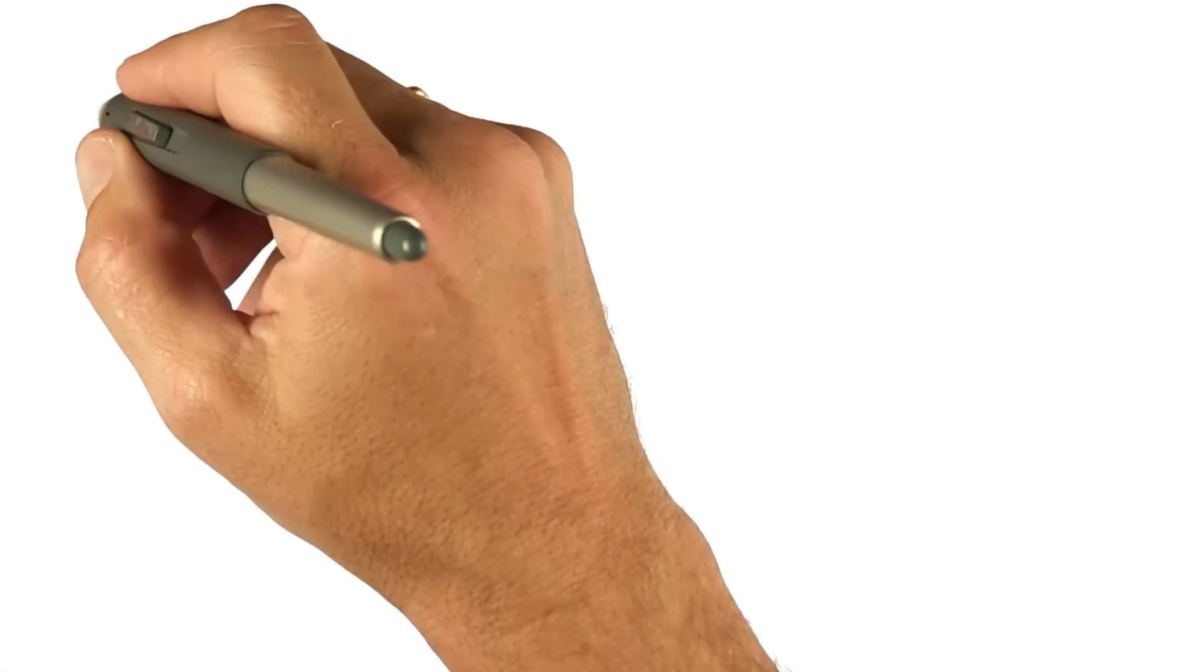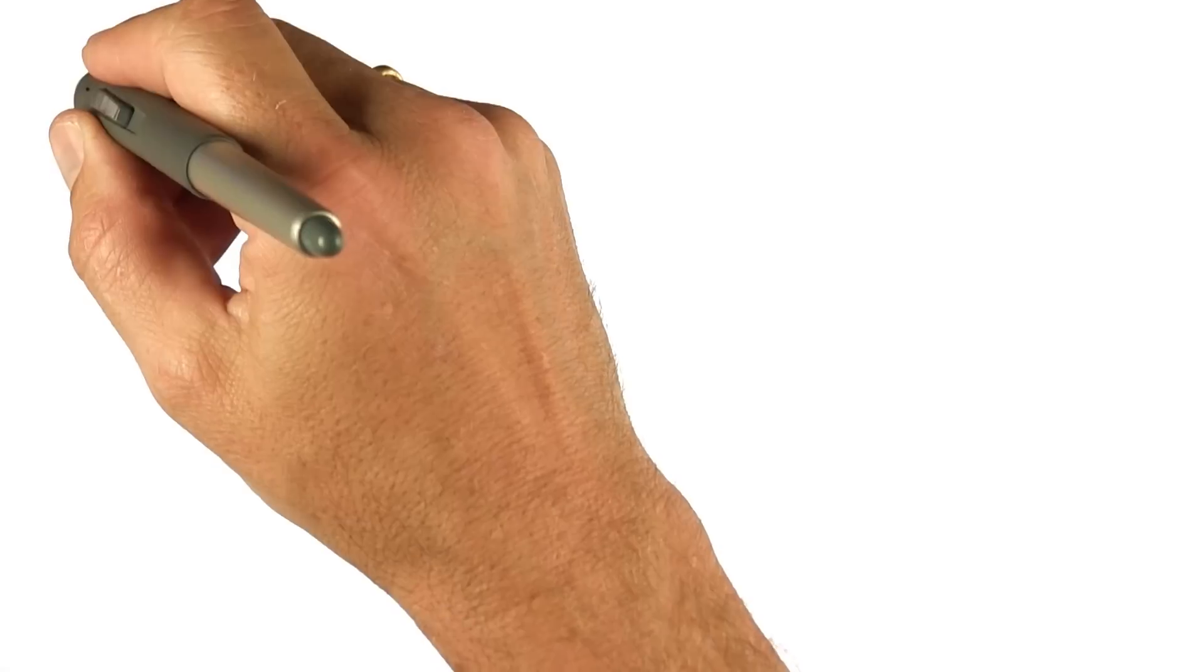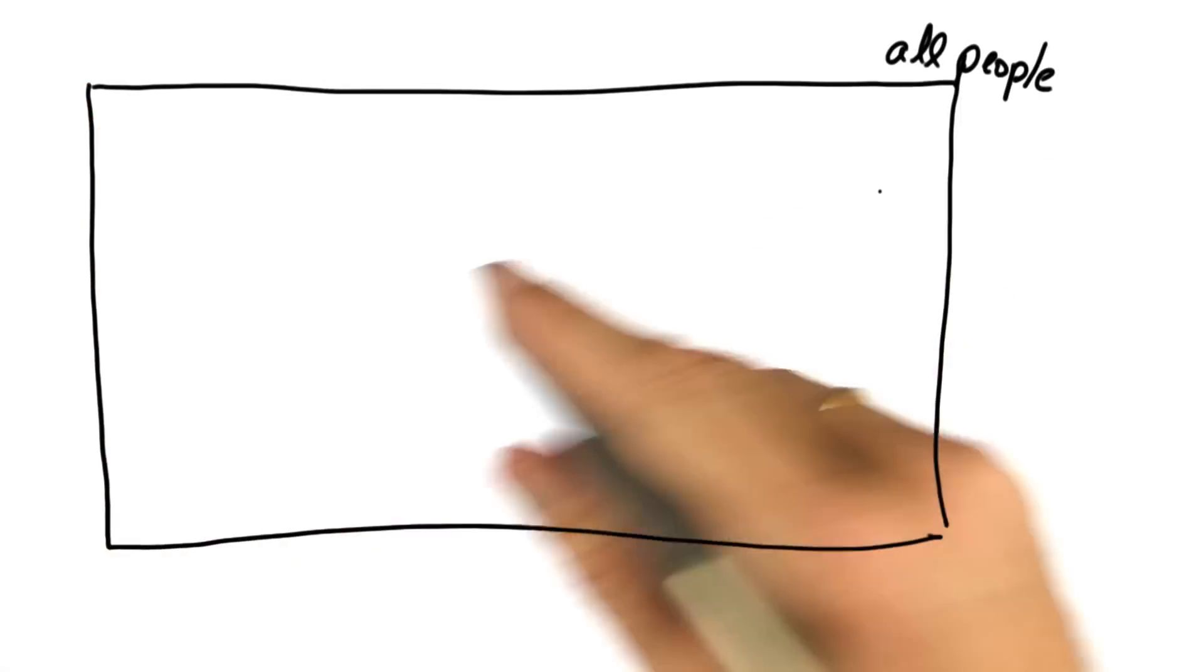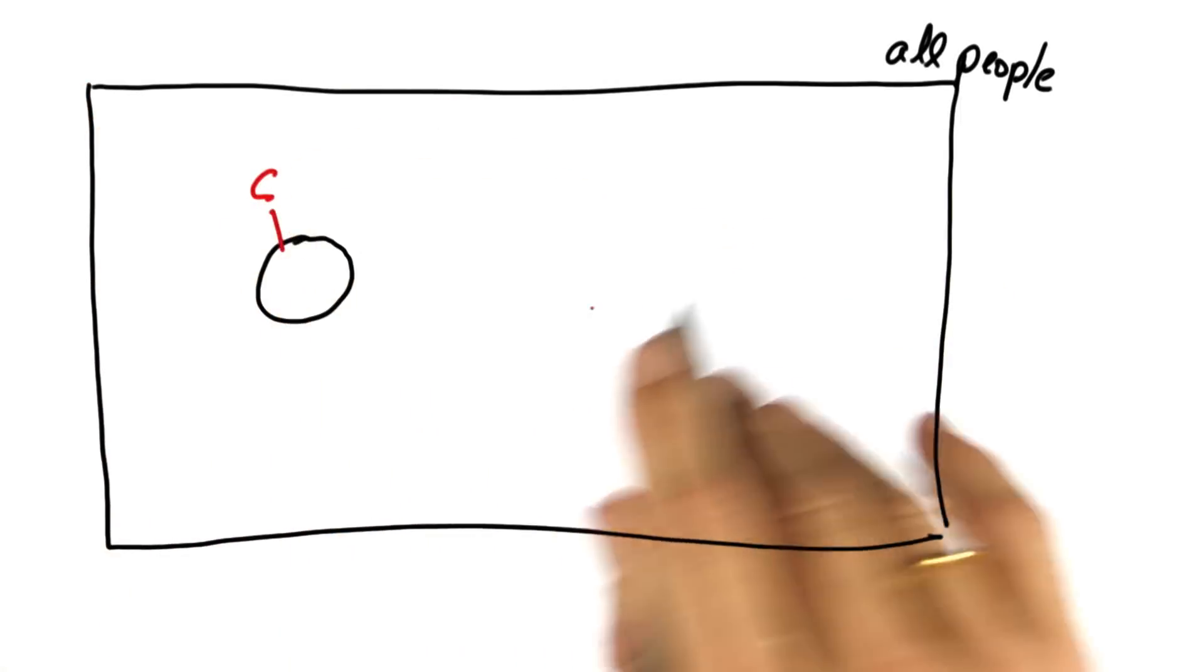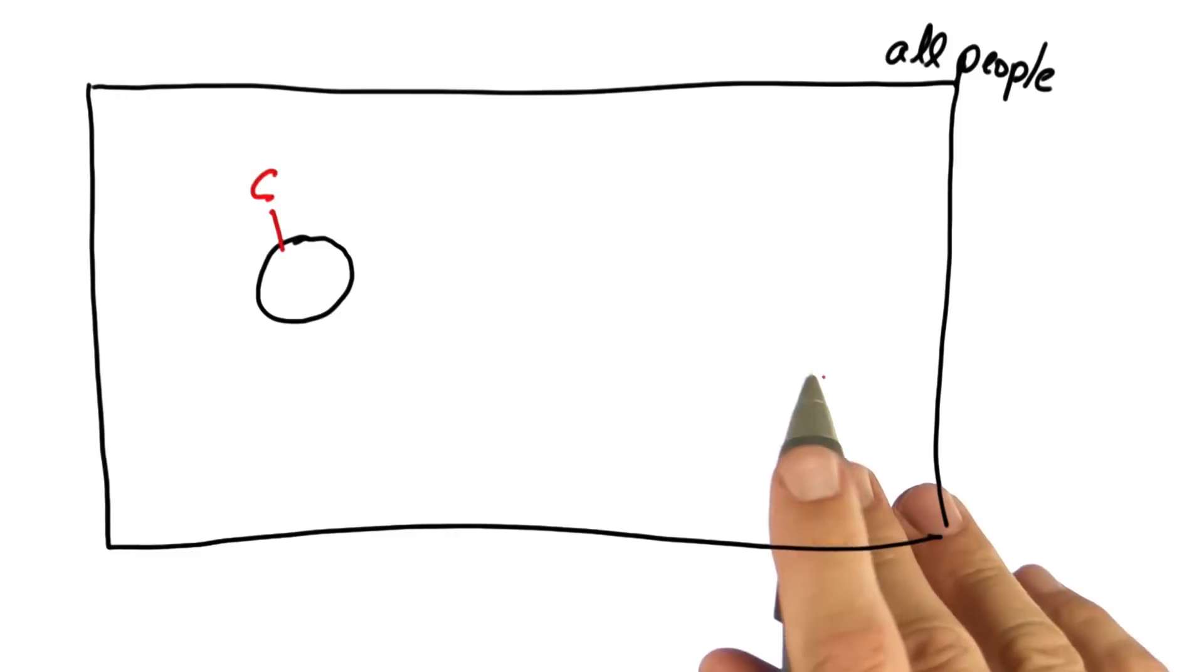To answer this, let's draw a diagram. Suppose these are all the people, and some of them, exactly 1%, have cancer. 99% is cancer free.